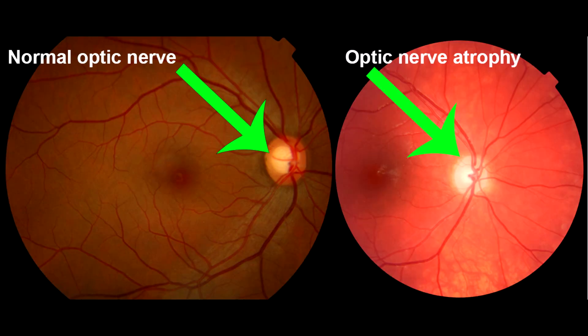Optic nerve atrophy is damage to the optic nerve. Causes include poor blood flow to the eye, disease, trauma, or exposure to toxic substances.